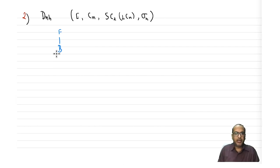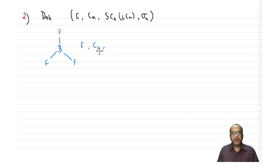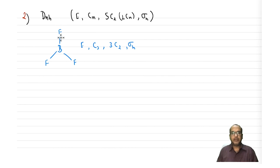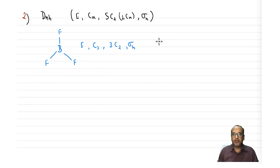One example of Dnh is BF3. We can locate E, C3, three C2s, and σh — the molecular plane in the plane of the board. C3 is perpendicular to the plane of the board, and the three C2s pass through the three B–F bonds. This is very clear.